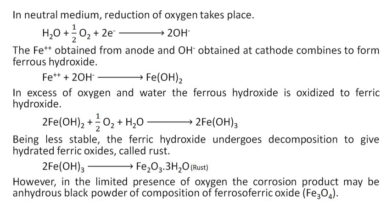The ferrous iron obtained from the anode and hydroxide obtained at the cathode combine to form ferrous hydroxide. In excess of oxygen and water, the ferrous hydroxide is oxidized to ferric hydroxide. Being less stable, the ferric hydroxide undergoes decomposition to give hydrated ferric oxides, called rust.